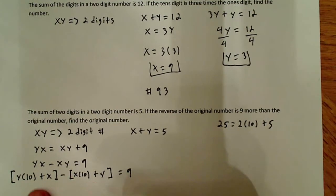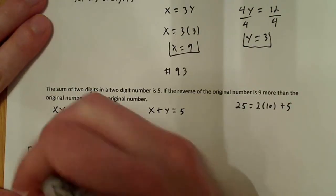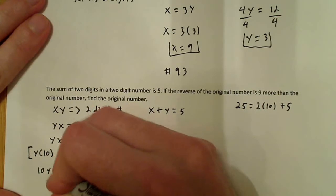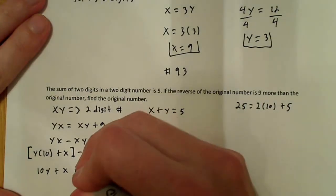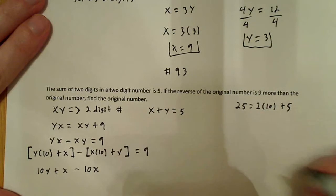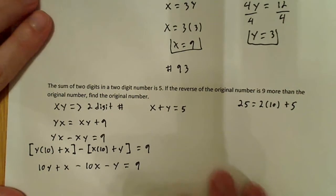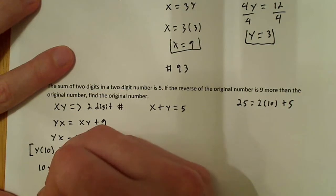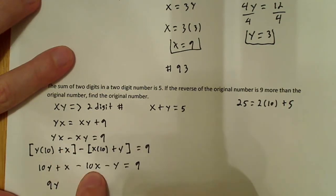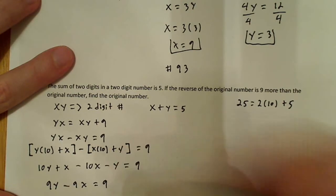What I can do now is start working through this and removing these brackets. So this is 10y plus x. Remember, there's a negative here, but I have to distribute this negative into both of these. So it ends up being minus 10x, minus y equals 9. Now I can do a little more because I get some common terms. I got plus x and minus 10x, and 10y and minus y. So 10y minus y gives me 9y, and negative 10x plus x gives me negative 9x, and that all equals 9.